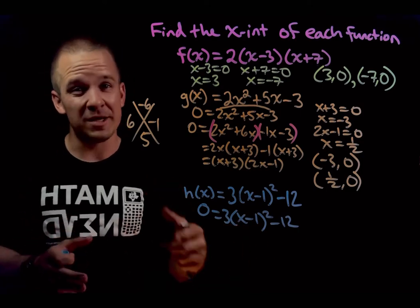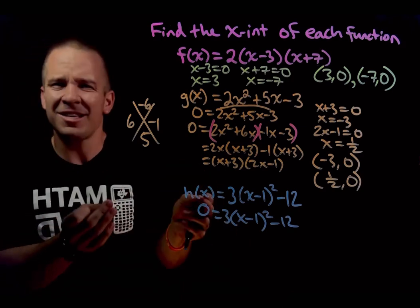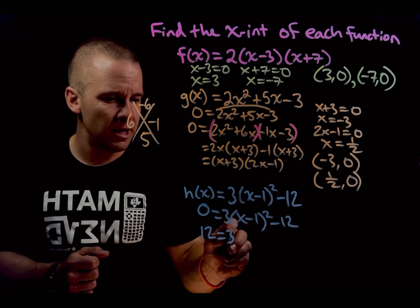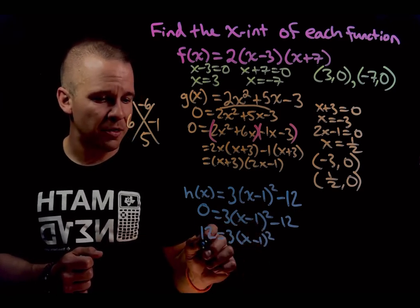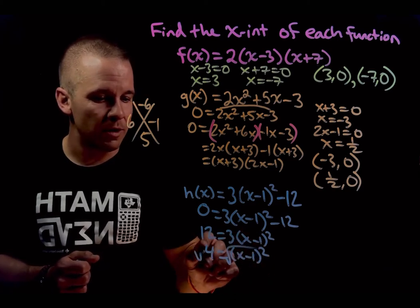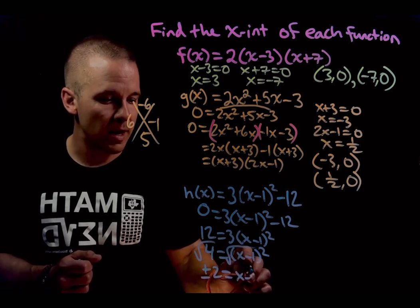You could foil this out x minus one times x minus one, but it's already in this nice little packaged up form for us. I'm going to add 12. So I add 12 and I get three and then x minus one quantity squared. Now I'll divide by three to get four equals x minus one quantity squared. And now I can square root on both sides to get plus or minus two equals x minus one.